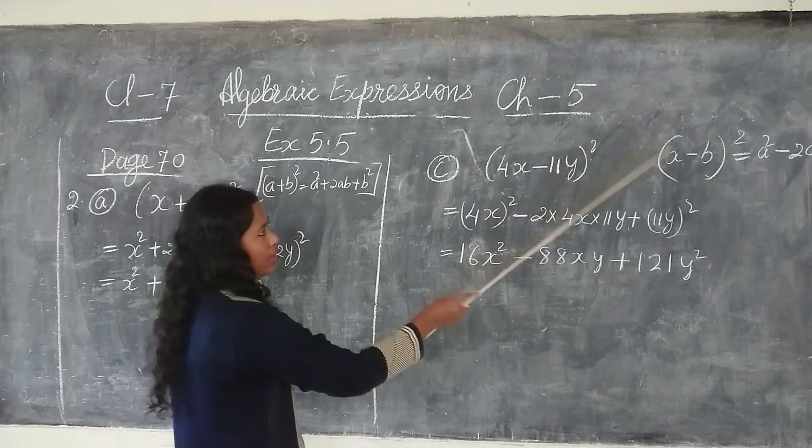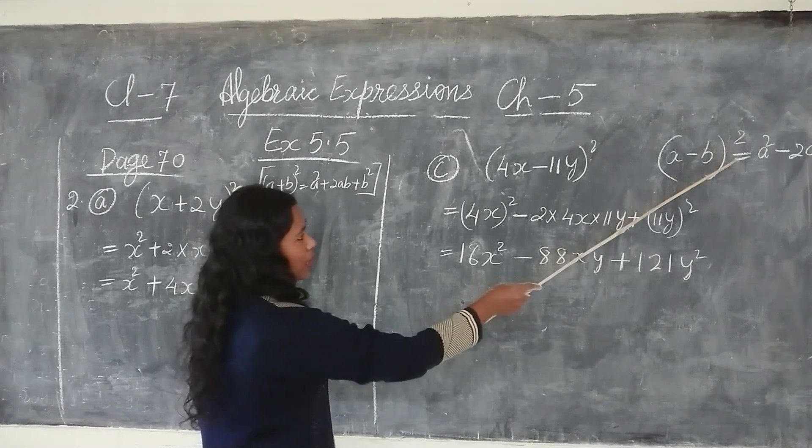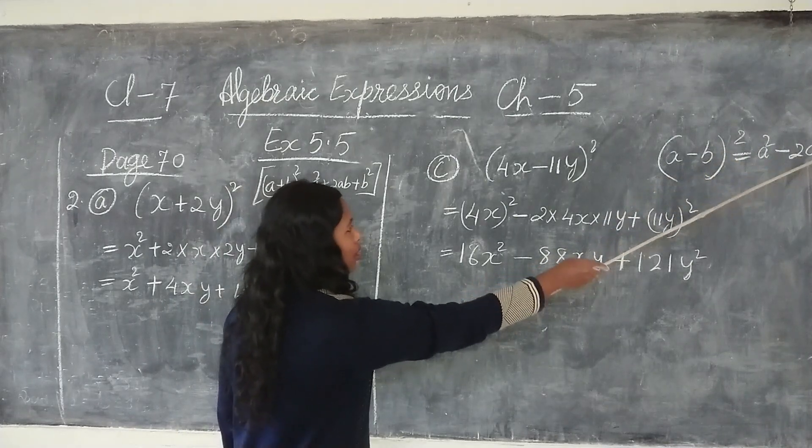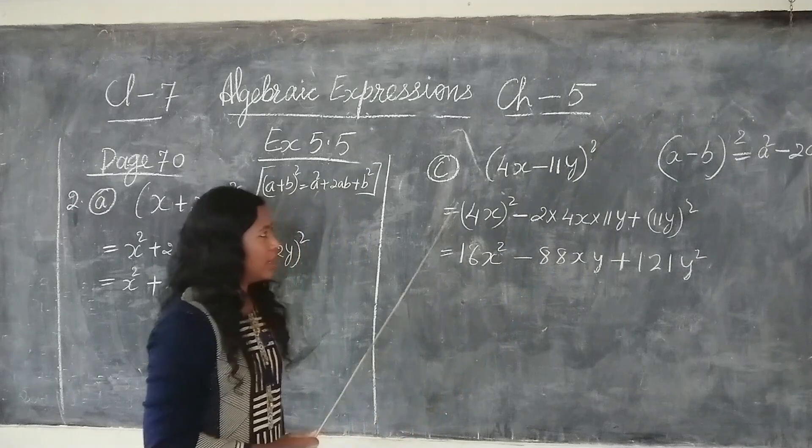So here also the formula is a minus b the whole square, equal to a square minus 2ab plus b square.